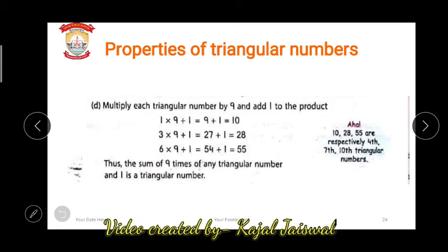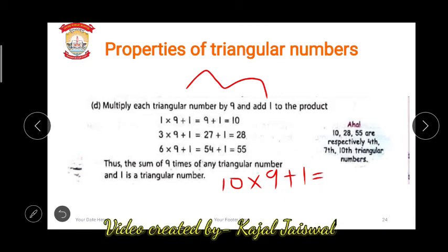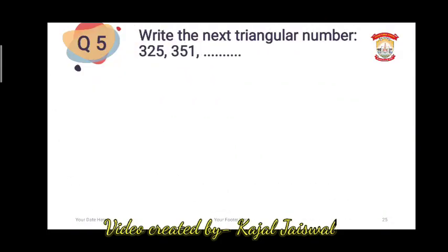The next property: multiply any triangular number by 9 and add 1 to the product, and you will get another triangular number. For example, 10 is a triangular number: 9 times 10 is 90, plus 1 is 91, so 91 is also a triangular number. So if you already know any triangular number, multiply it by 9 and add 1 to get another triangular number.